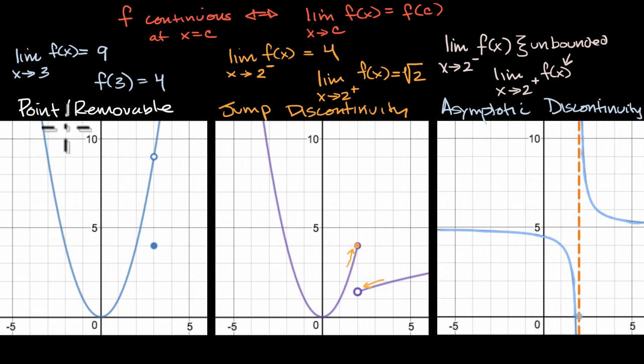So this is a point or removable discontinuity, jump discontinuity, I'm jumping. And then we have these asymptotes, a vertical asymptote. This is an asymptotic discontinuity.